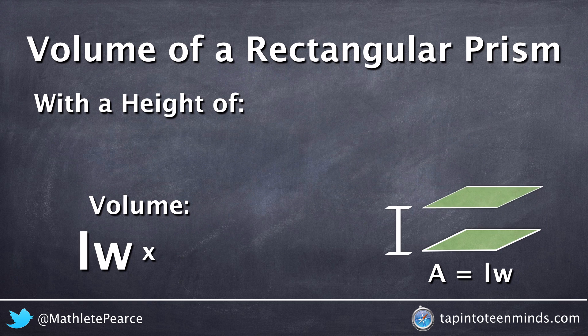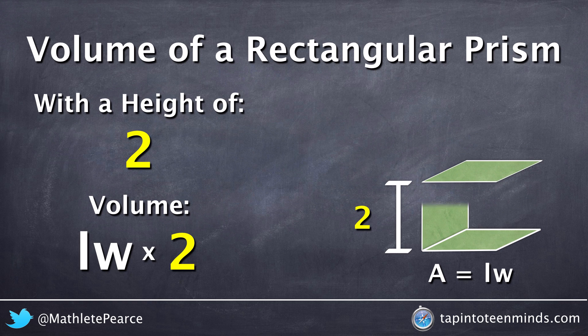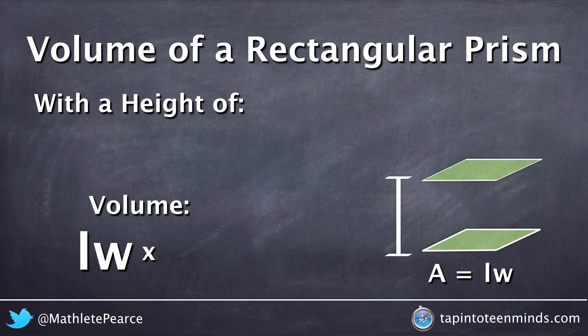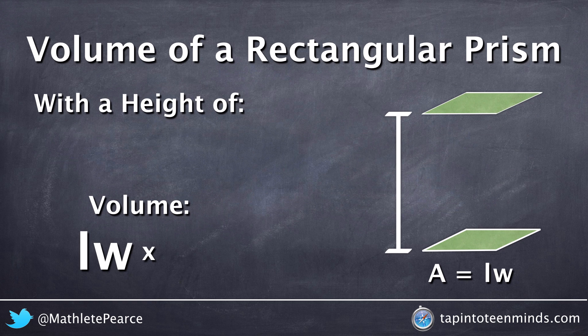We can then increase this rectangular prism to a height of 2 by multiplying the area of a rectangle formula by 2, followed by increasing the height to any value by using a variable. In this case, we're going to use the variable h.